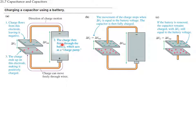A battery is like a pump — it pumps charges, drawing positive charges from one plate and transferring them through the battery. The battery accumulates positive charges on the end connected to the other plate, so charges get distributed on the lower plate. Whenever there is charge on a pair of plates, an electric field is set up between them that is uniform, given by the charge divided by the area divided by epsilon zero.